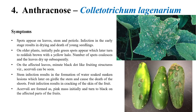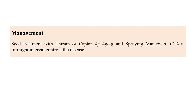In a mango anthracnose, typical anthracnose appears as black dot-like substances on yellow fruit — a black hole-like appearance that is characteristic of Colletotrichum. For management, seed treatment with thiram or captan at 4 grams per kilogram of seeds, along with spraying mancozeb at 0.2 percent at fortnightly intervals, is recommended to control this disease.